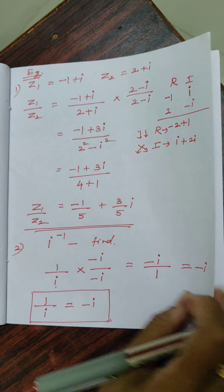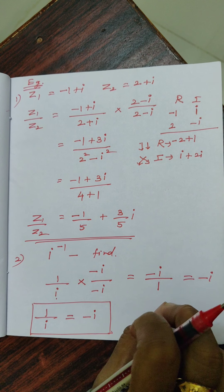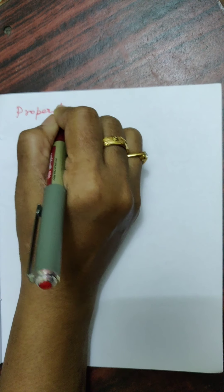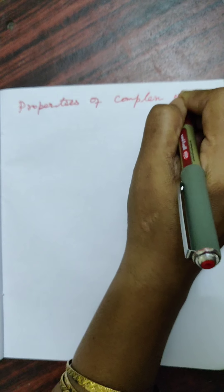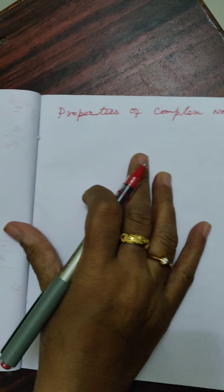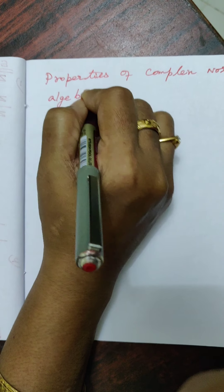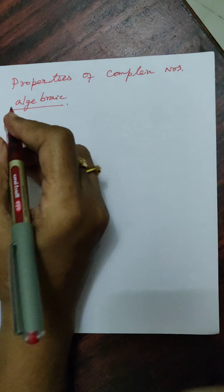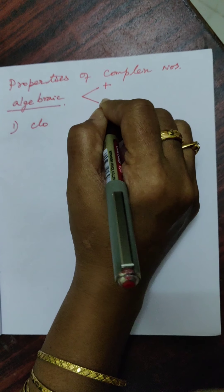So we have covered all four operations: addition, subtraction, multiplication, and division. I still need to explain the concept of conjugate of a complex number. Now we are going to see the algebraic properties of complex numbers — both properties on addition and properties on multiplication.